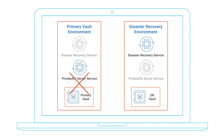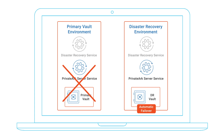In the event of a failure in the primary vault, the DR service can trigger an automatic failover process. By the end of the process, the Private ARK server service is started on the DR vault and the DR service is stopped, effectively turning the DR vault into the new primary vault.